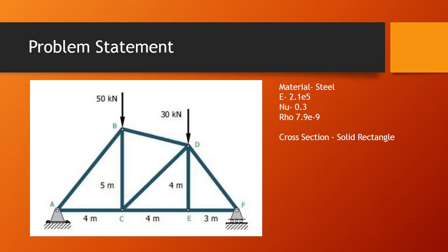This is my problem statement. This is a structure which is fixed at one end and free at the other end. The material is steel, and the properties of steel are mentioned. The cross section is a solid rectangle having the dimension of 100 by 100.